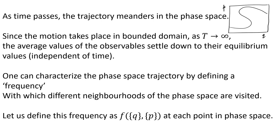As t goes to infinity, the average values of the observables settle down to their equilibrium values, which are of course independent of time. One can characterize the phase space trajectory by defining a frequency with which different neighborhoods of the phase space are visited. This frequency gives us a weighting factor — if a system visits a part of the phase space more than other parts, that neighborhood is more important in giving us equilibrium quantities.